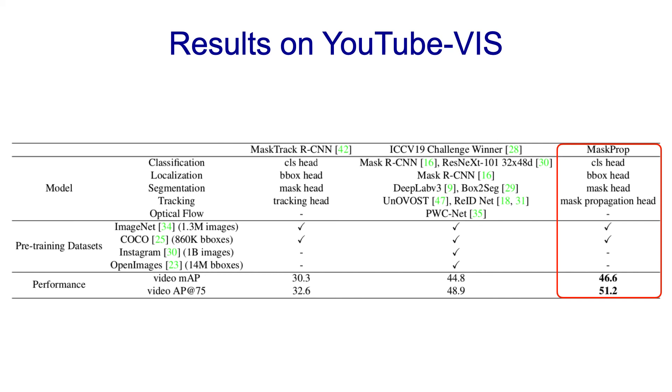Furthermore, compared to MaskTrack R-CNN, our MaskProp yields a significant 16.3% gain in video mAP performance.